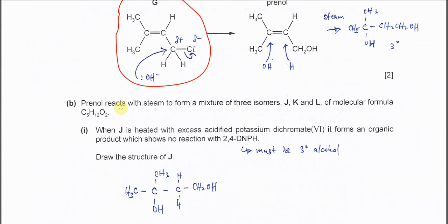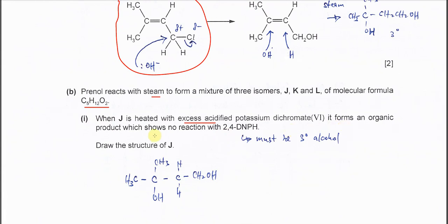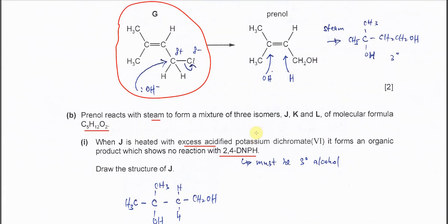Part B, prenol reacts with steam to form a mixture of three isomers with the molecular formula C5H12O2. And when J is heated with excess acidified potassium dichromate, it forms an organic product which shows no reaction with 2,4-DNPH. So which means it's not going to form this carbonyl group. So we are quite sure that the J, it cannot be oxidized. So the alcohol that cannot be oxidized, it must be a tertiary alcohol.